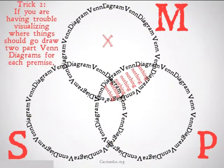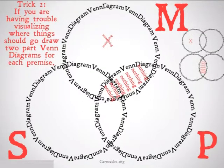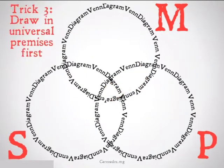Trick number two: if you're having trouble visualizing where things should go, try going back a step and drawing just the basic Venn diagrams with two circles, and then mapping those onto where they should go for the bigger three-part Venn diagram.